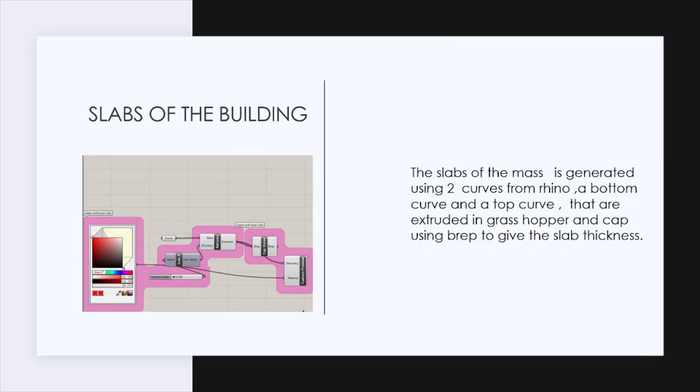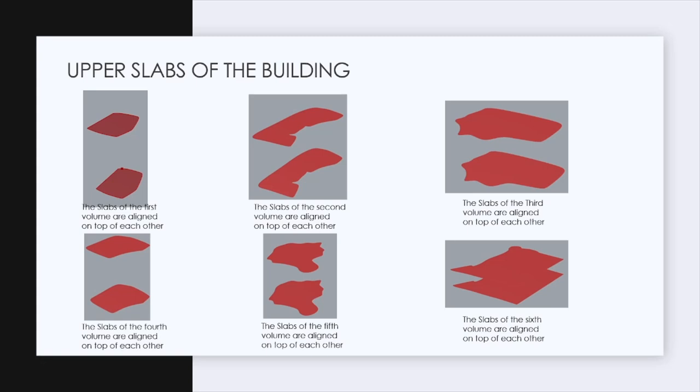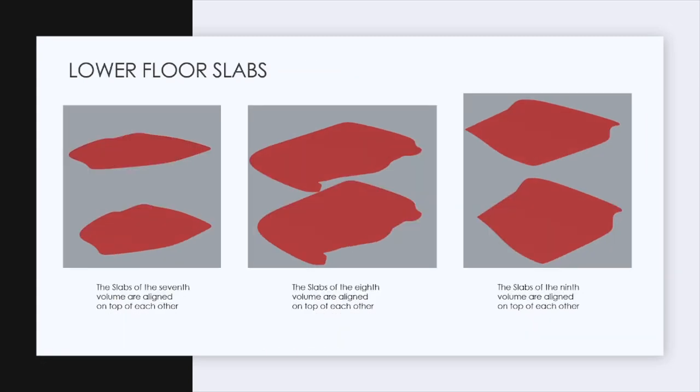Moreover, the slabs of the building are generated using two curves from Rhino, a bottom curve and a top curve. So the slight difference between the slabs and the masses is that the slabs were extruded and capped using B-Rep to give the slabs thicknesses in Grasshopper. These are the upper slabs of the building and these are the lower slabs of the building.